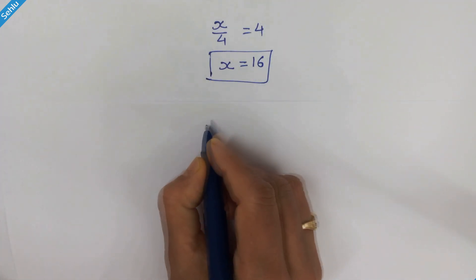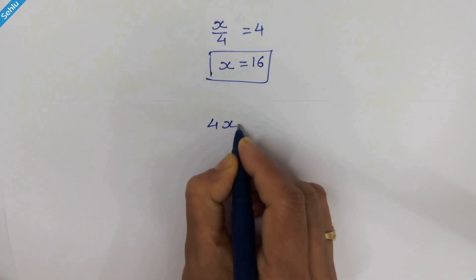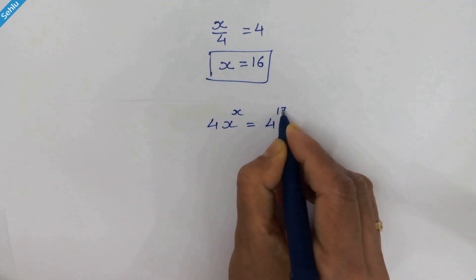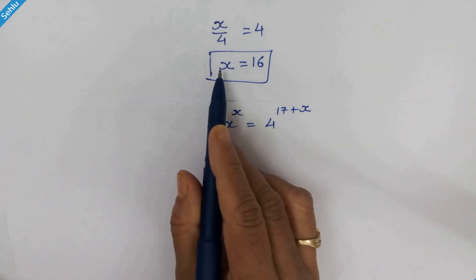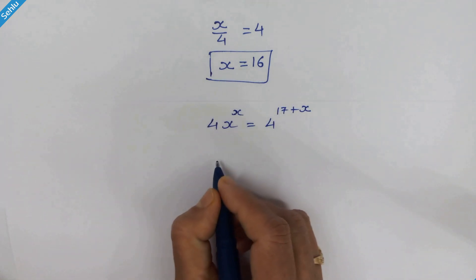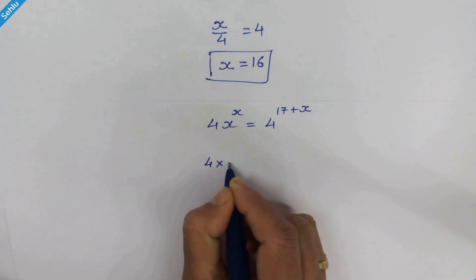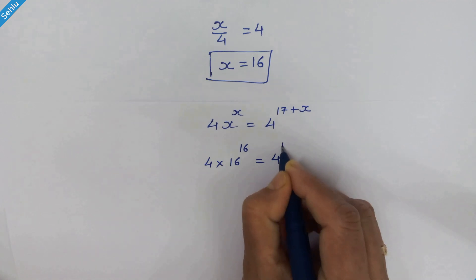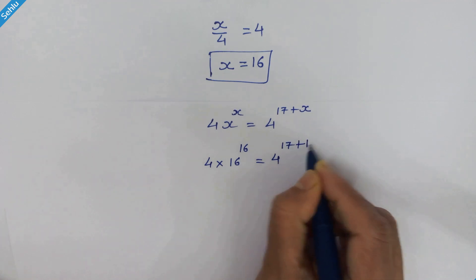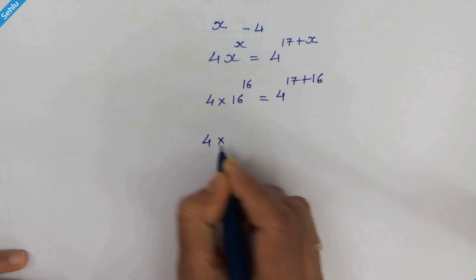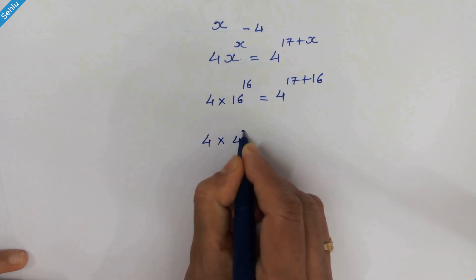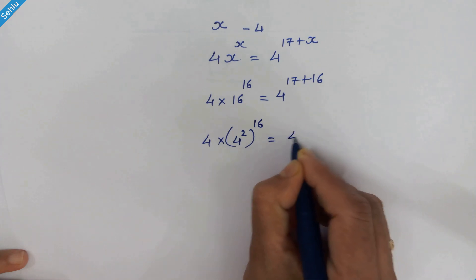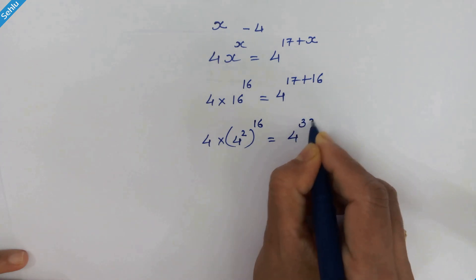As always, we will verify our answer. Our given equation is 4 times x raised to x is equal to 4 raised to 17 plus x. Putting x equal to 16, we have 4 times 16 raised to 16 is equal to 4 raised to 17 plus 16. Now 4 times 16 can be written as 4 squared whole raised to 16, which is equal to 4 raised to 33.